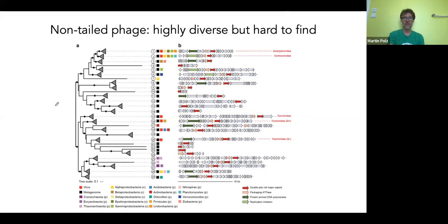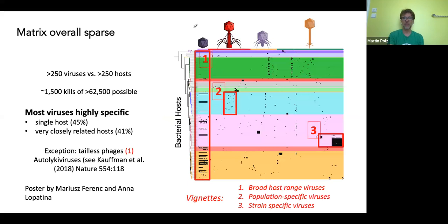This new virus type is shown in the cross-infection matrix in a square representation. You can see how unusual the breadth of infection is. Most viral infections were highly specific, with a predominance of single hosts or very closely related hosts. One other important observation: the matrix is very sparse — most bacterial strains we pulled out, we could not find a virus for.